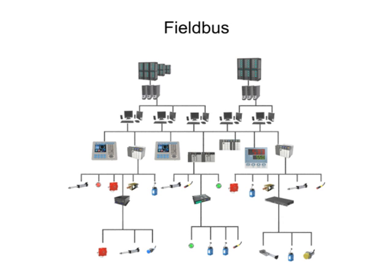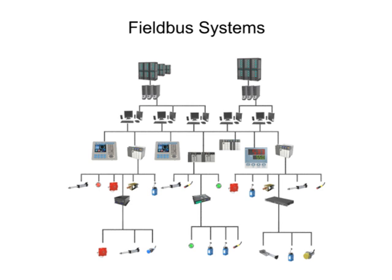Computer systems used within the industrial sector are connected by networks, known generally as fieldbus. Fieldbus systems are a way to connect computers and instruments to a single network in a manufacturing plant and allow for real-time control and monitoring.